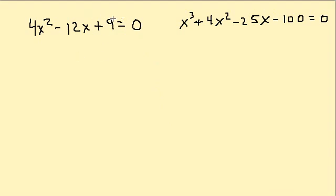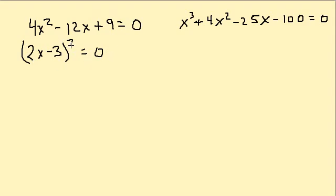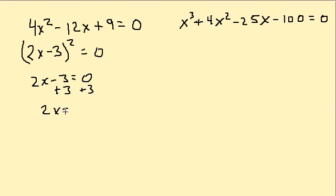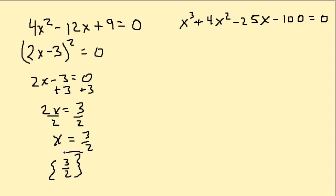Here, when we go to factor, notice this is a perfect square trinomial. It factors into 2x minus 3 squared, which is 2x minus 3 times 2x minus 3. All we have to do is set 2x minus 3 equal to 0 and solve: 2x equals 3, divide by 2, x equals 3 halves. The only solution here is 3 halves.